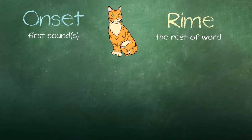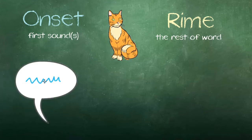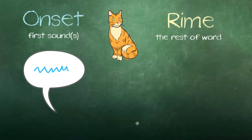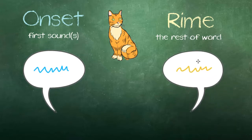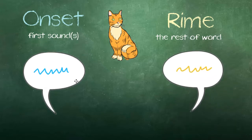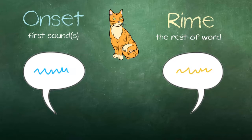Let's look at the word cat. The onset of cat is /k/. The rhyme of cat is /at/. /k/... /at/... cat.